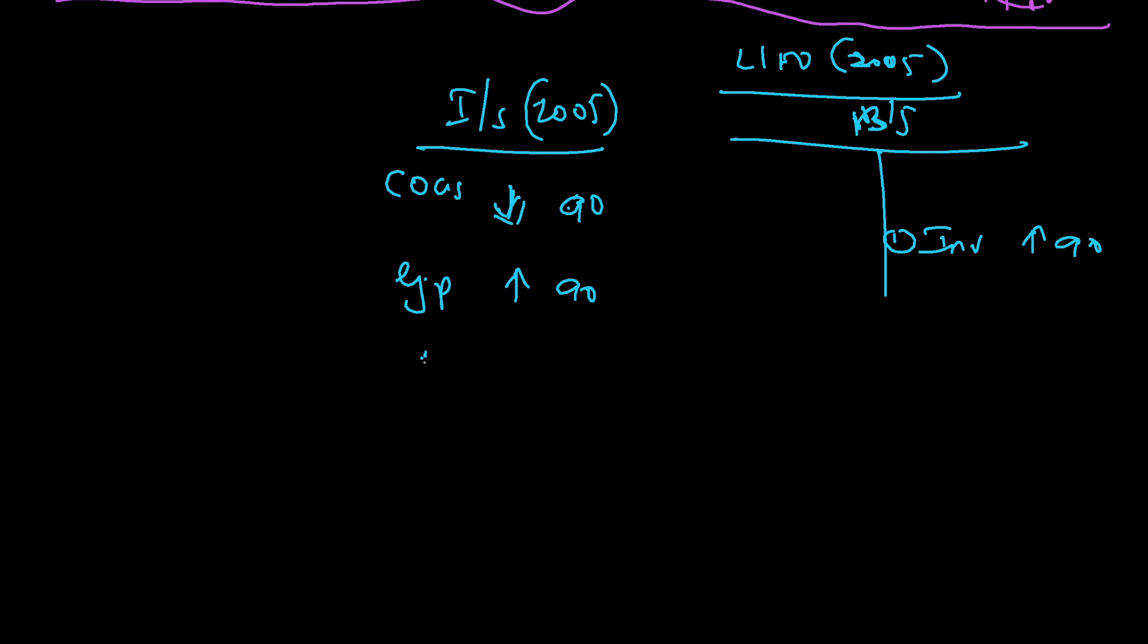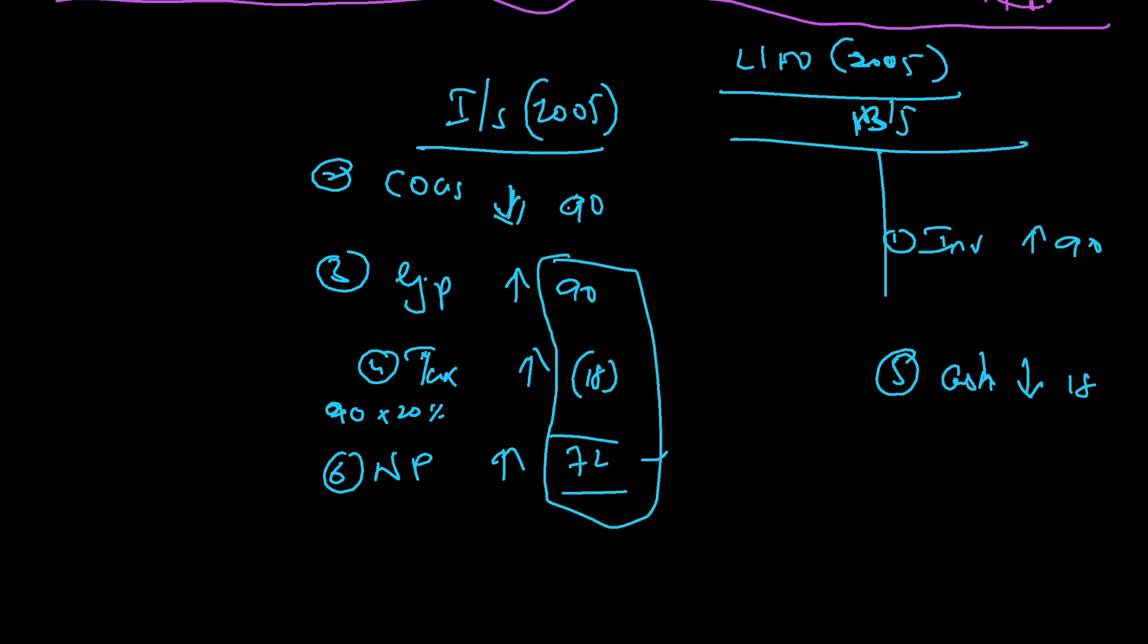Tax: I'm supposed to pay more tax, so 90 times 20% tax will be 18. I have to pay tax, so I will number all these steps. Because I'm paying more tax, my cash will come down by 18. Net profit will go up by 72, and retained earnings will also come to 72.